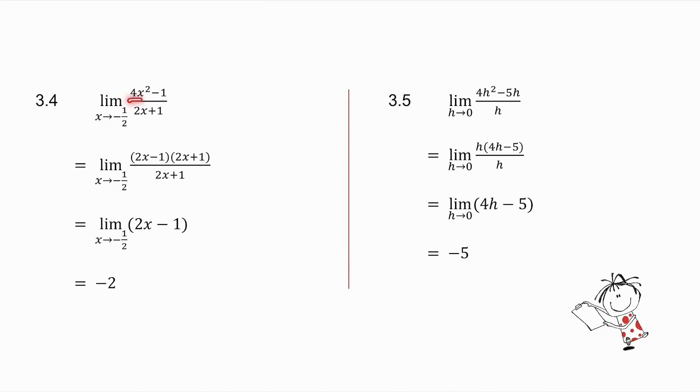3.4, I have difference of two squares. The 2x plus 1 cancels. And as x gets closer and closer to minus 1.5, my answer is minus 2. 3.5, take out a common factor. The x cancels. As x gets closer to 0, my answer is minus 5.